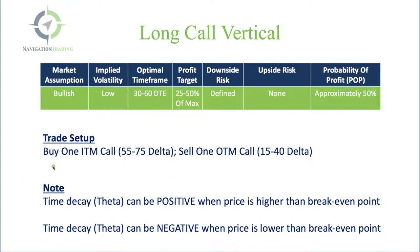The trade setup is essentially: we're going to buy one in-the-money call, anywhere from the 55 to 75 delta range. Then we're going to sell one out-of-the-money call in that 15 to 40 delta range. We want these strikes to be equal distance away from where price is currently trading. As a note on theta: theta can be positive if price is higher than the breakeven point, and theta can be negative when price is lower than the breakeven point.